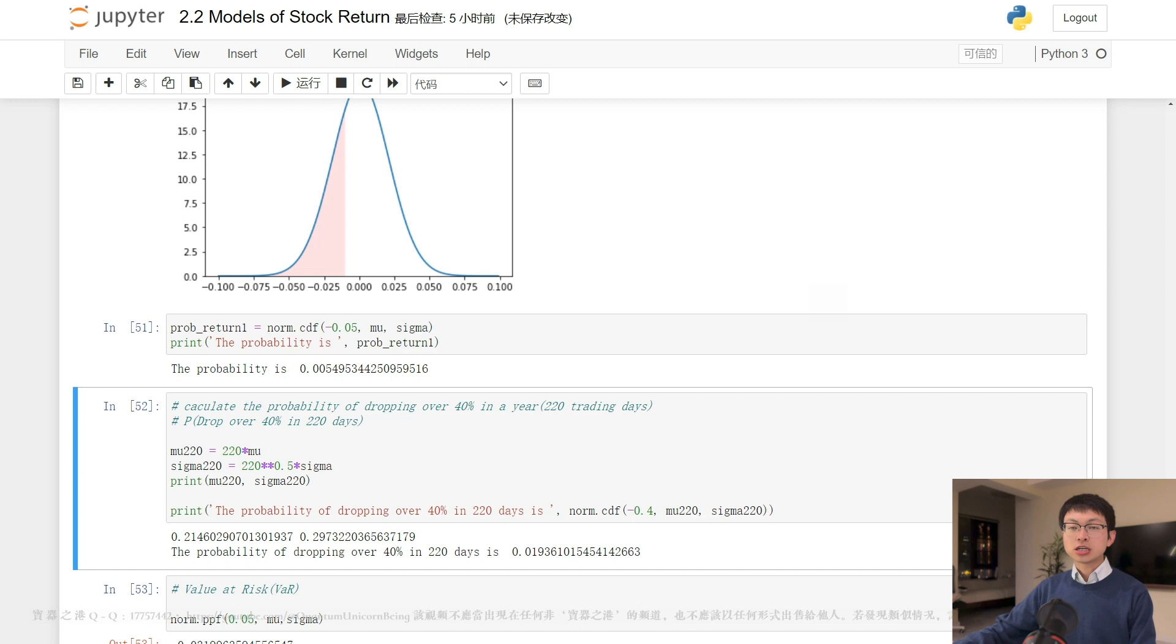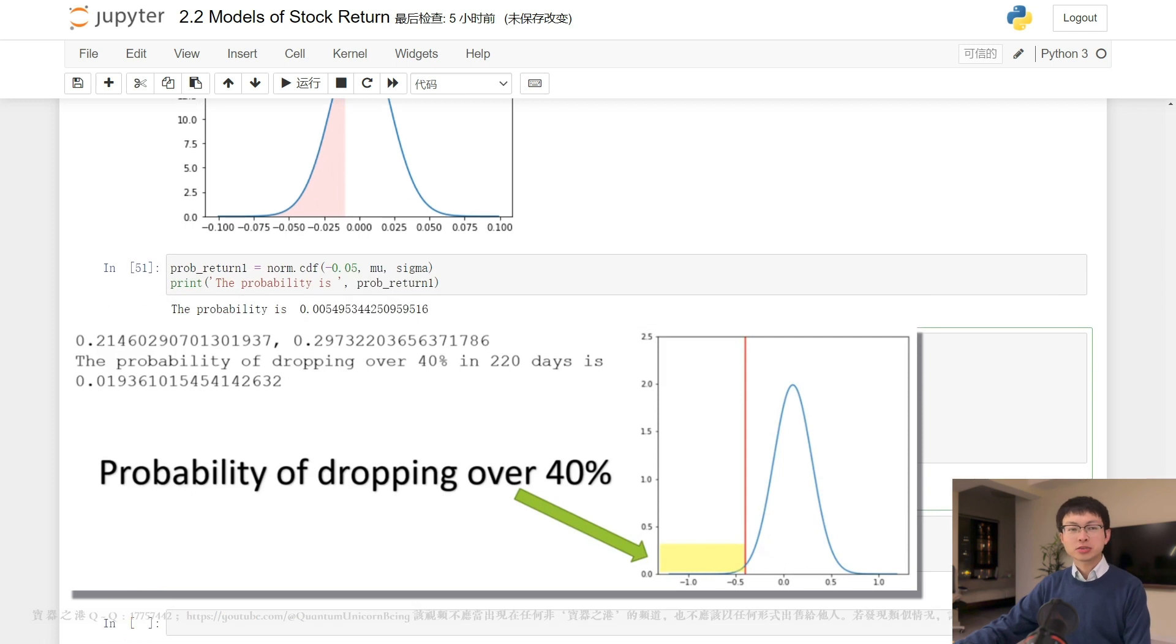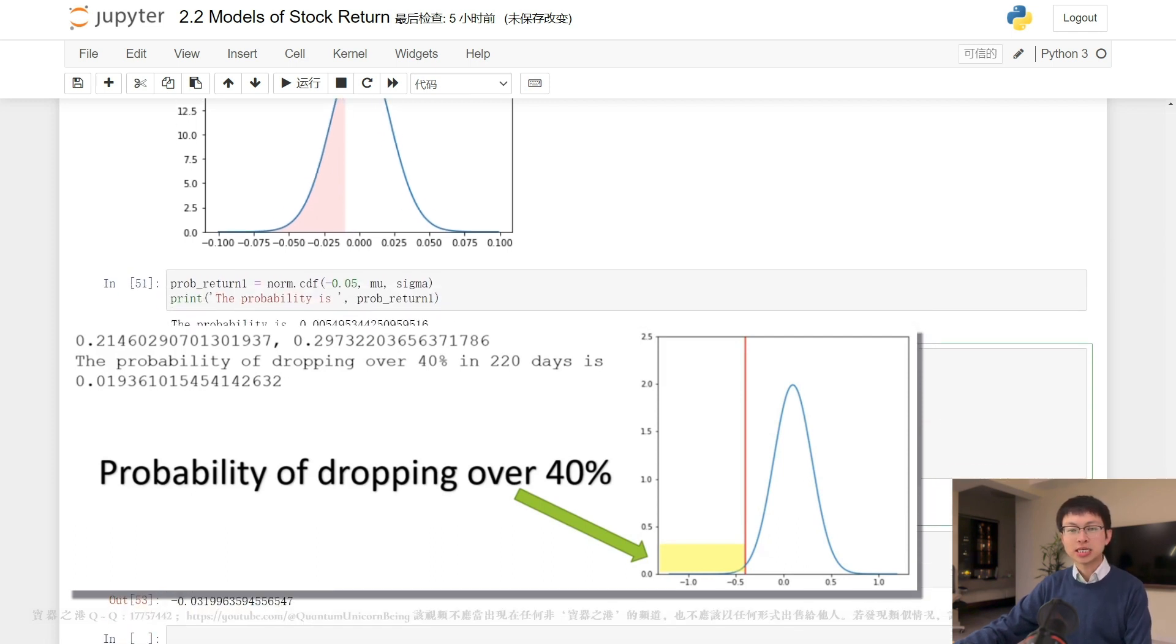Since the daily returns are assumed to be independent, the variance of a yearly return is equal to the sum of the variances of the 220 daily returns. Using the cumulative distribution function, we compute a probability of less than 2%, indicating that there is only a small chance of experiencing a yearly loss of more than 40%. So we can conclude that it is inconsistent with the stock's overall performance, which raises the question about what happened in 2012 and 2013.